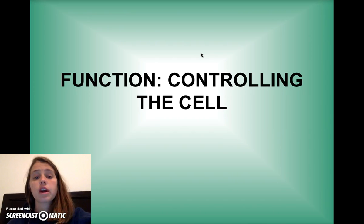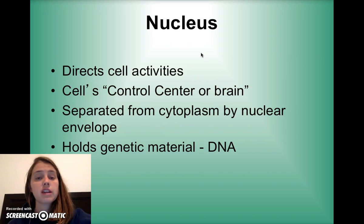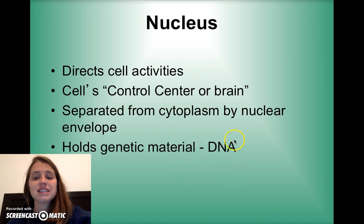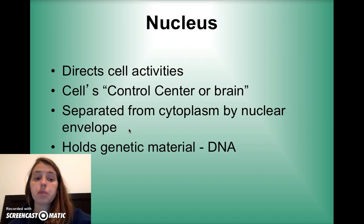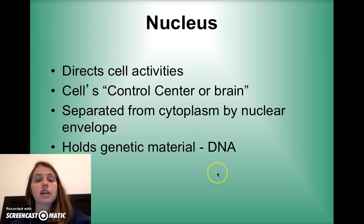The next group of organelles functions as the control center of the cell. The nucleus directs all of the cell's activities — whatever the cell does, the nucleus has told it to do. It's the cell's control center, or brain. It's separated from the cytoplasm by a nuclear envelope, and it holds all the genetic material. All of our DNA is held in the nucleus of every single one of our cells — billions or trillions of cells, each with a nucleus containing DNA.